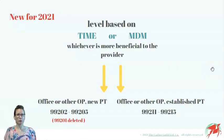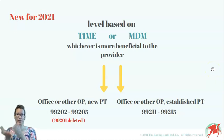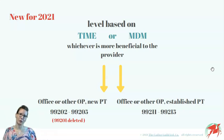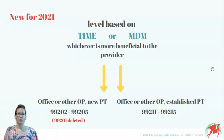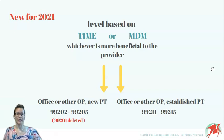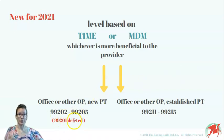So what's new for 2021? Going forward, we are allowed to use either time or medical decision making alone to level a service. We will not need the history and exam elements anymore. Just like before, we are allowed to use whichever method is more beneficial to the provider. And last but not least, 99201 got deleted.